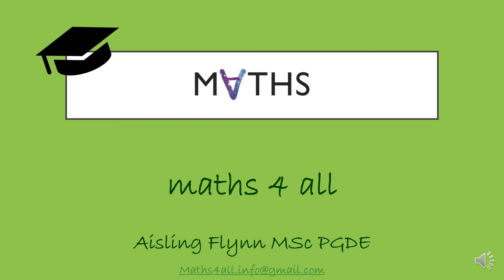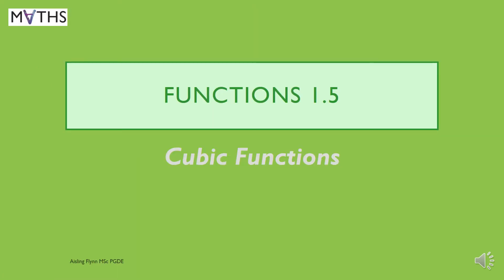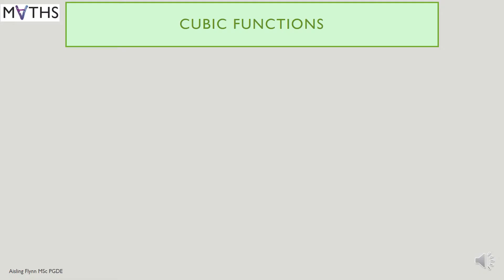Welcome to Maths for All, I'm Aisling Flynn. This is Functions 1.5: Cubic Functions. Cubic functions have an x cubed, or x to the power of 3, term. The word 'cube' refers to something that is 3D — length by width by height — so to the power of 3 is what we call cubic.